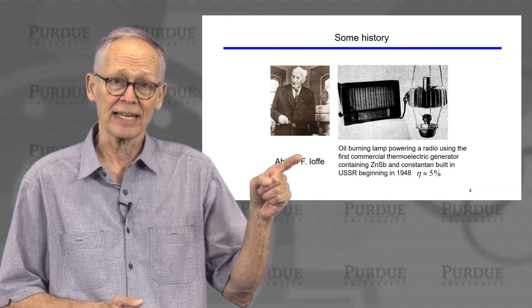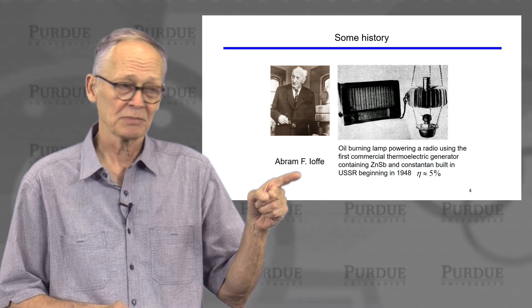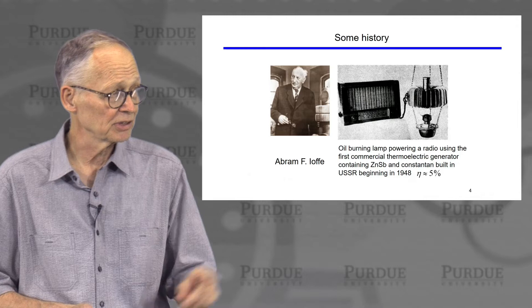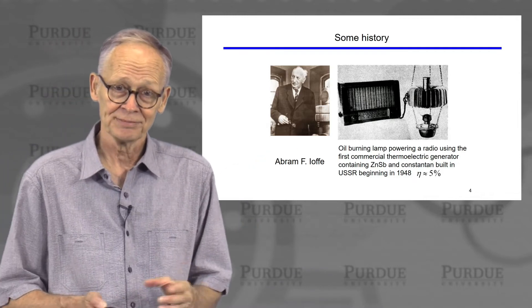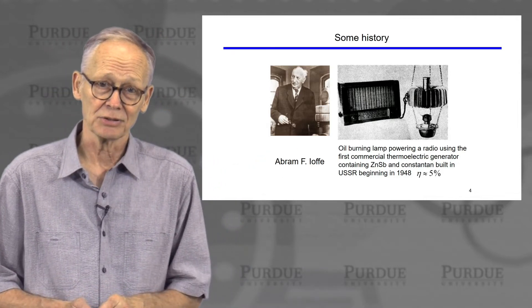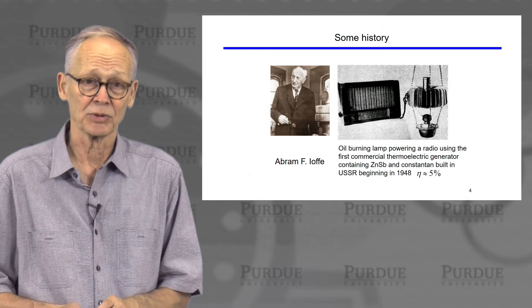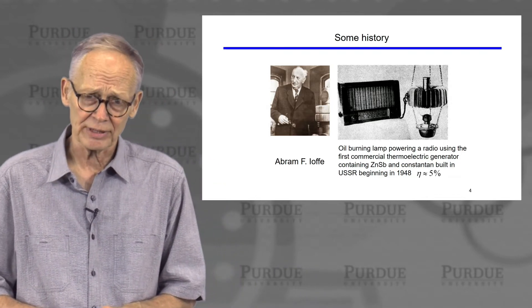This system uses a kerosene lamp and the heat from the kerosene lamp is converted to electricity to power a radio. And that was a technology that was used in Russia around the late 40s and early 50s. So it's had a long history.